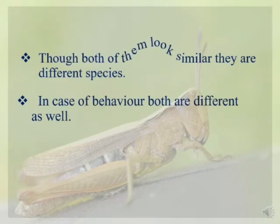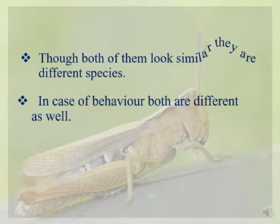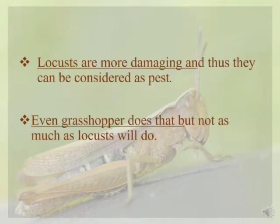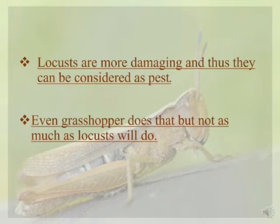Although both grasshoppers and locusts look similar, they are different species. In terms of behavior, both are different as well. Locusts are more damaging and can be considered a pest. Grasshoppers can also cause damage, but not as much as locusts.